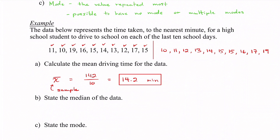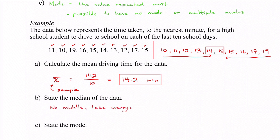With 10 different numbers there is no exact middle, since there's an even amount. Counting 5 in from one side gets you to 14, and counting 5 in from the other side gets you to 15. So the two middle numbers are 14 and 15. We take the average: 14 plus 15 equals 29, divided by 2 gives 14.5. So our median is 14.5 minutes.